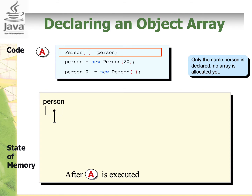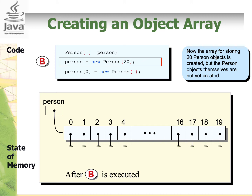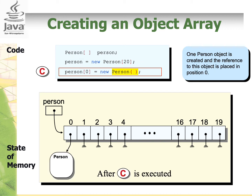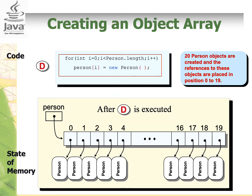This slide shows what happens when we declare an object array for the class Person. With Person[] person, we only declare the array — no array is allocated yet. When we write person = new Person[20], an array of size 20 is created, so we can store 20 Person objects. As mentioned, we haven't created the Person objects yet — we only created the array object. When we write person[0] = new Person(), we are creating a Person object using the no-argument constructor. Because this is an object of Person, in memory it will have the reference or address of the object. To create an object for all persons, we can use a for loop and each will have their own reference.